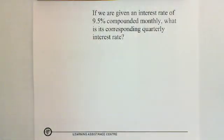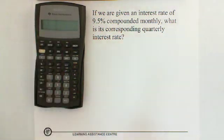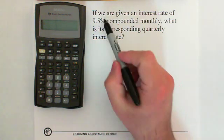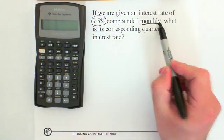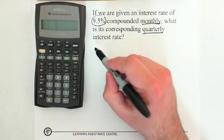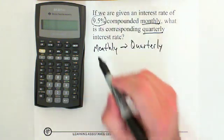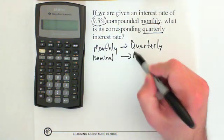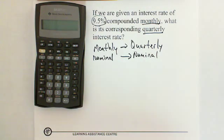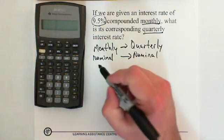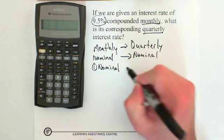We've got a third question. In this third question, if we are given an interest rate of 9.5% compounded monthly, what is its corresponding quarterly interest rate? We are given 9.5% monthly and we want to change it to quarterly — going from monthly to quarterly. That means we're actually going from nominal to nominal. When you go from nominal to nominal, you first have to take the existing nominal rate and change it to effective. So step one: change the existing nominal rate to effective.